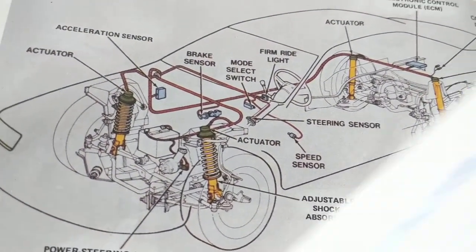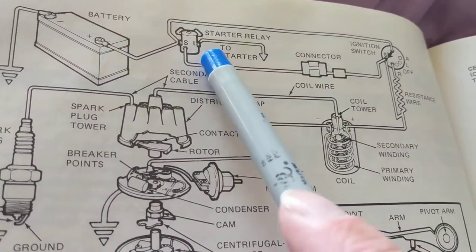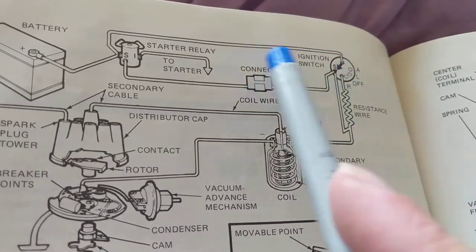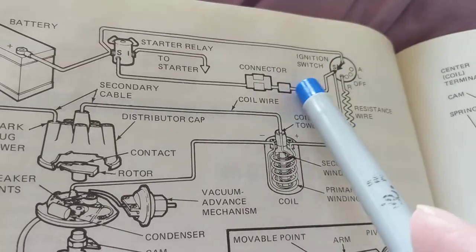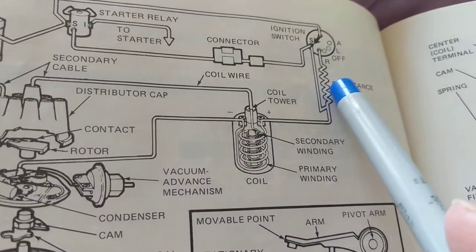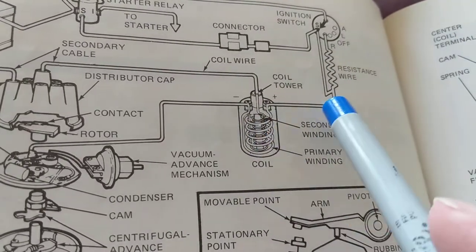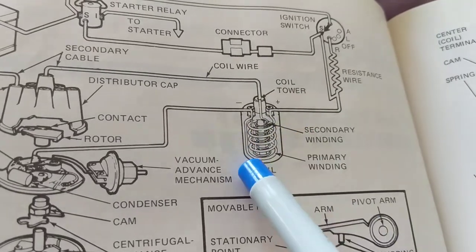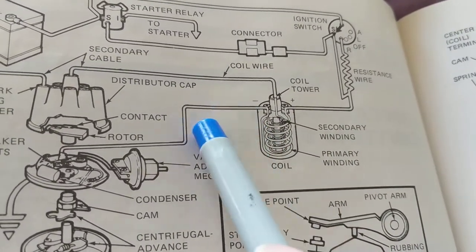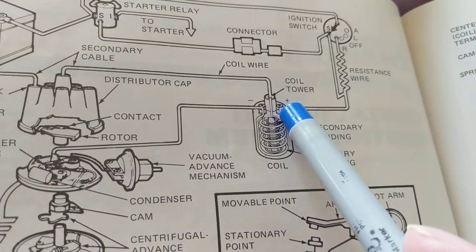Let me show you the distributor system. Here is an overview of the ignition system. From the battery we always start — we go to the starter relay, then to the starter motor. This is the ignition switch: in start position we activate the starter relay to start the starter motor. In the run position we go through a small resistor wire to the ignition coil. The ignition coil is like a transformer — it has a primary with few turns and a secondary with many more turns, giving you a step-up transformer. We need 20,000 to 30,000 volts to go to the distributor.